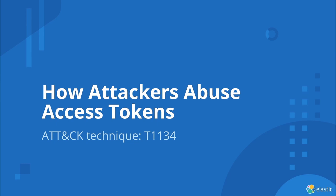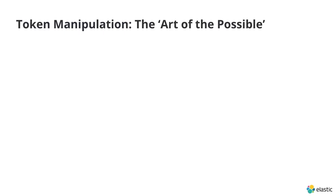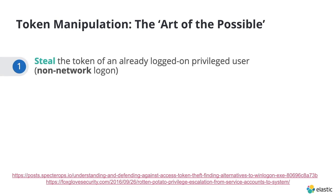The second part of the presentation focuses on how attackers can actually abuse access tokens. Consider a typical scenario: an attacker has phished a user and has a shell or foothold in a corporate network. They're running in a process within the security context of that user, who has no privileges across the domain. So any attempts will use their cached credentials and will fail. The attacker has got to move quickly — but what can they do?